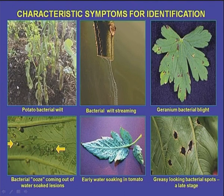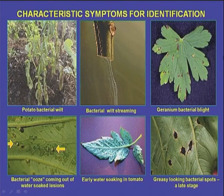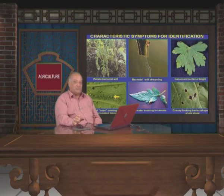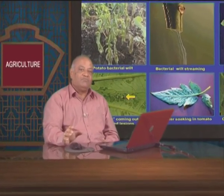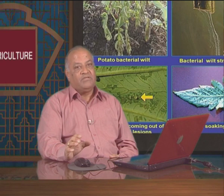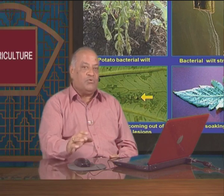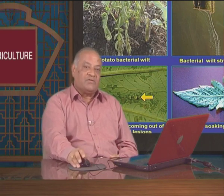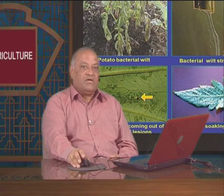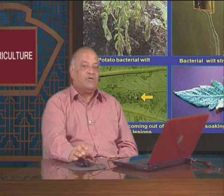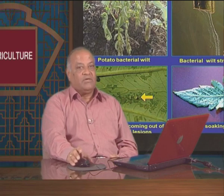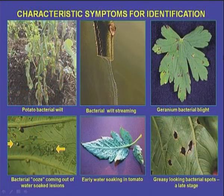Here we are looking at potato bacterial wilt. Wilts are very important bacterial diseases because they are caused by plugging of the vascular tissues. After bacterial infection, the pathogens plug the tissues which conduct mineral and water translocation in living plants. Therefore, water and mineral nutrition is not available to the affected plants, and ultimately after infection they show drooping of the leaves, as you can see here.